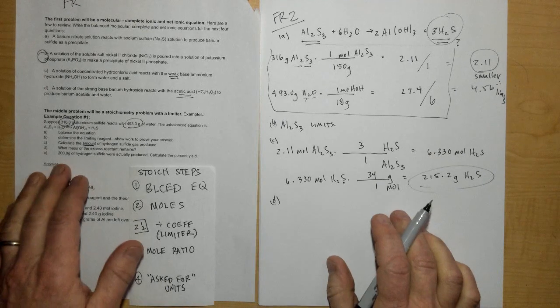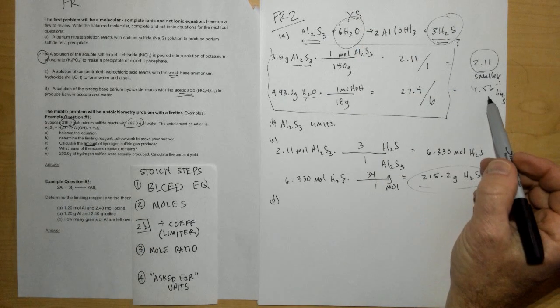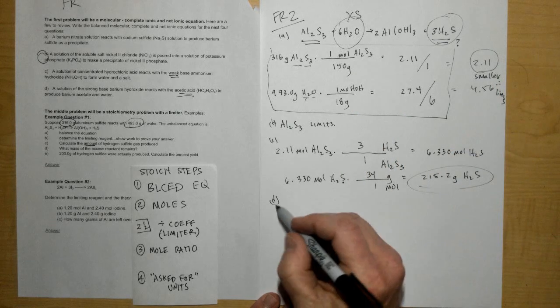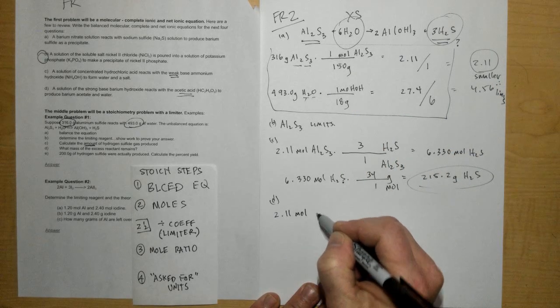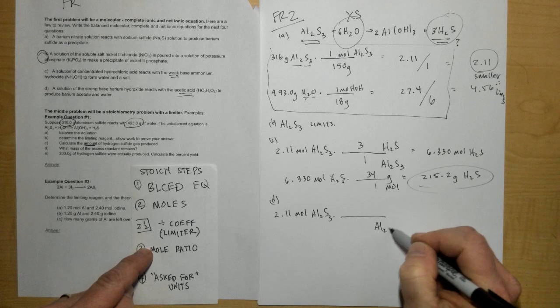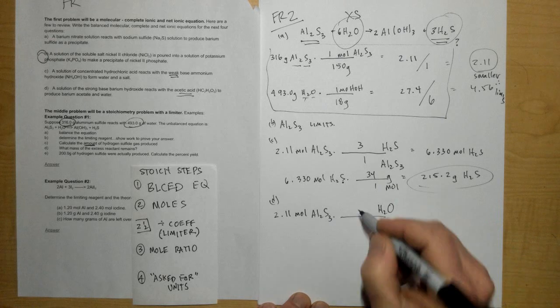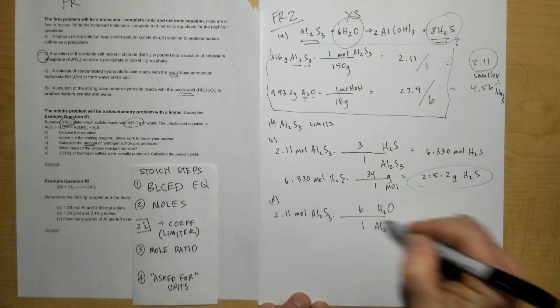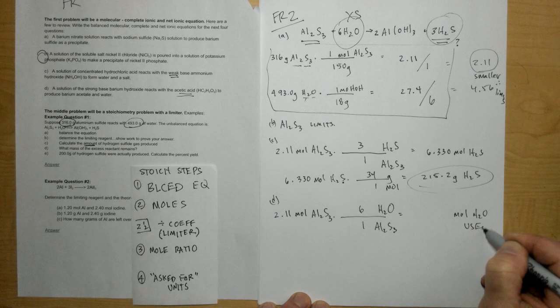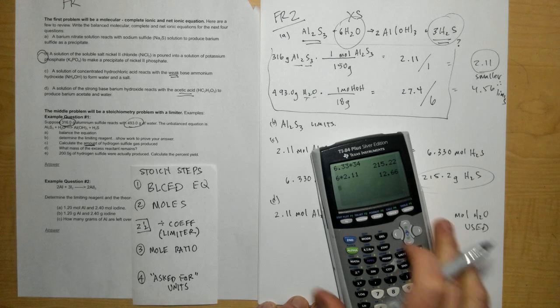Okay, then letter D says, what mass of the excess reactant remains? Water is my excess reagent because I had more of it. I found that out at the beginning after I divided by the coefficient. To find out how much water is actually going to be used, I start with my limiter. Start with my 2.11 moles of Al2S3, and now compare it or do a mole-to-mole ratio between the Al2S3 and the water, because I want to know how much water is actually going to be used. There's a 6 in front of the H2O and a 1 in front of the Al2S3. So this tells me how many moles of H2O are actually going to be used up. Let's do this on my calculator—6 times 2.11—and of course I get 12.66.